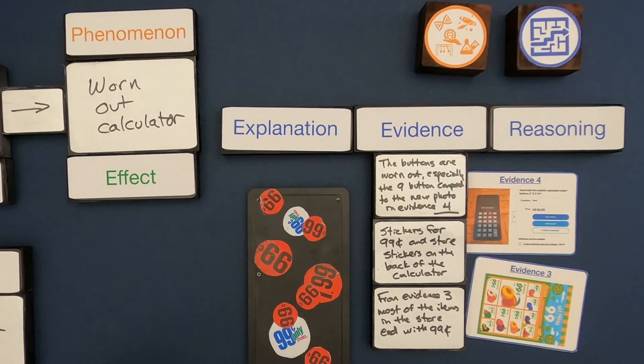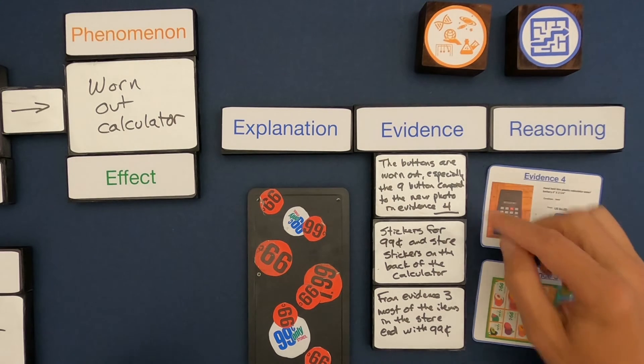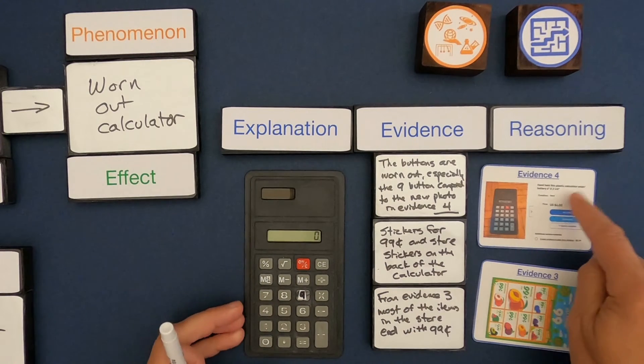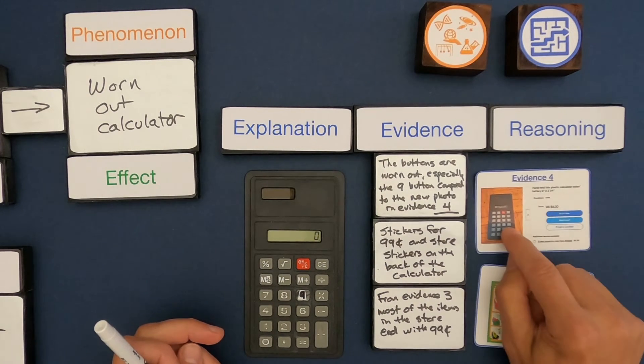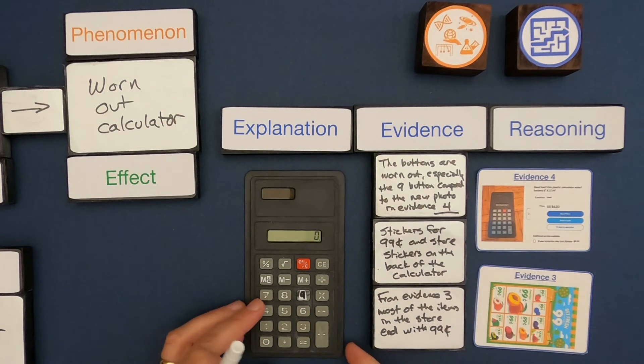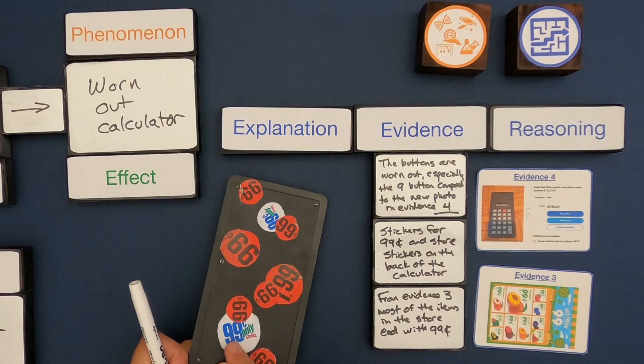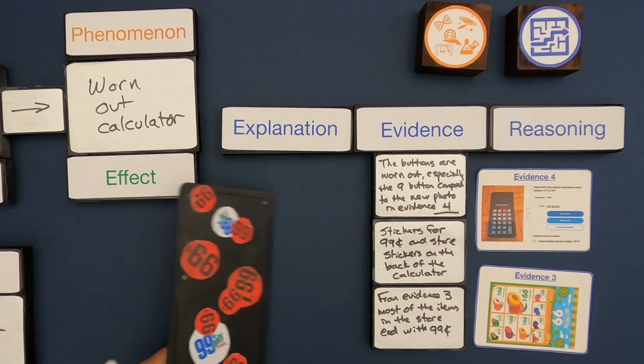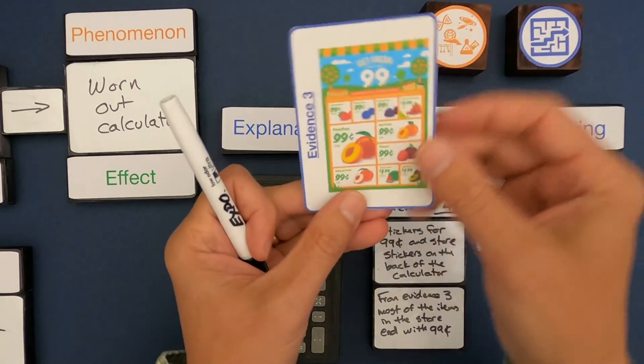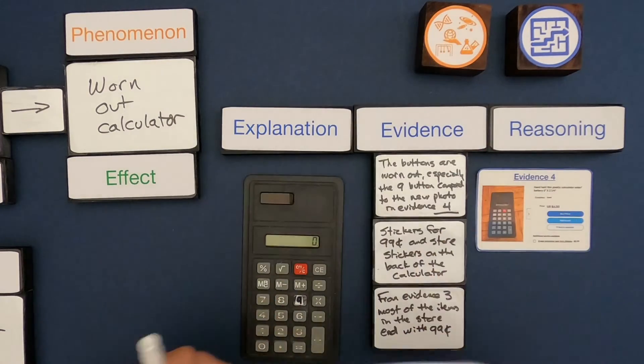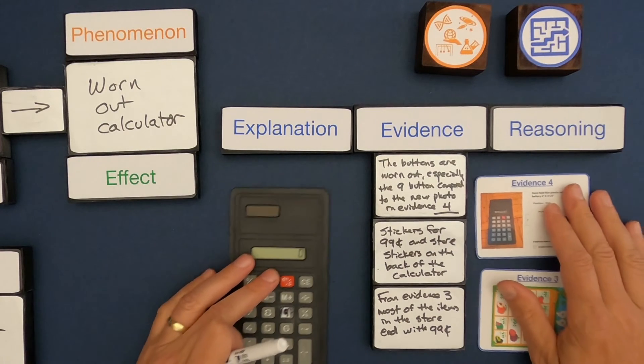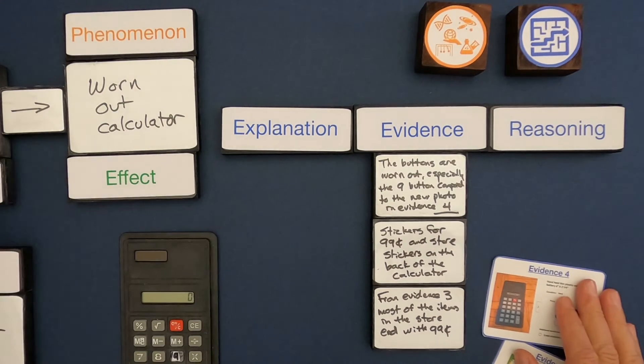The evidence that I've brought together is number one, the buttons are worn out, especially the 9 button's worn out a ton when we compare it to the evidence where we can see that the 9 clearly is going to show up. The next one, the stickers on the back. We've got 99 cent stickers and a 99 cent store on the back. I think that's important evidence. And then a flyer from the 99 cent store where it looks like almost everything ends in 99 cents. So that's good evidence. So now I'm starting to understand what I think is going on.